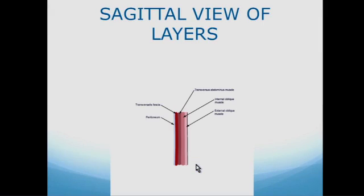Here are the sagittal layers of the abdominal wall. You have the external oblique muscle on the outside, the internal oblique muscle, then the transversus abdominis muscle. Then you encounter the transversalis fascia and finally the peritoneum. One of these layers has to be penetrated, and usually it's the transversalis fascia because that's the deepest layer.